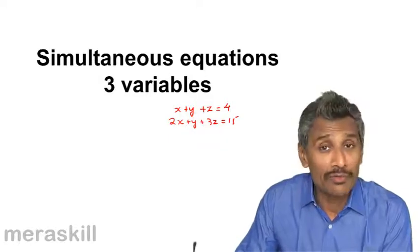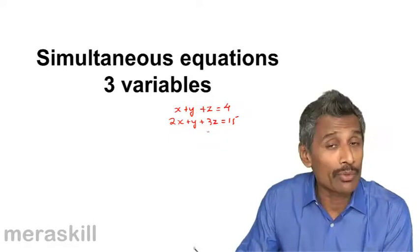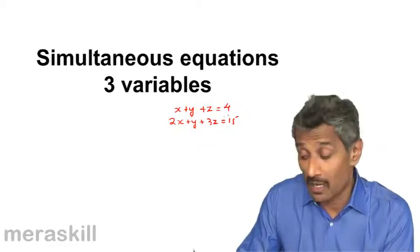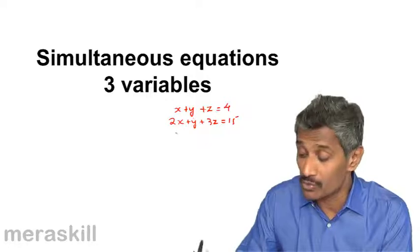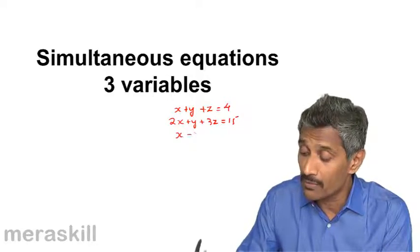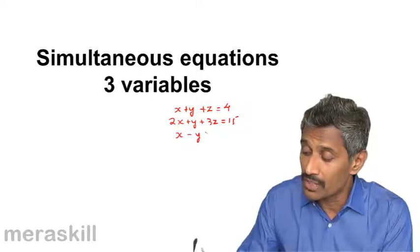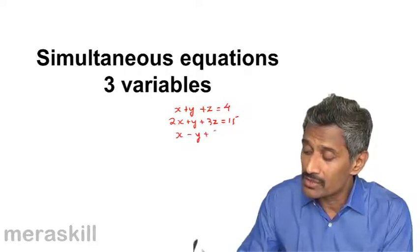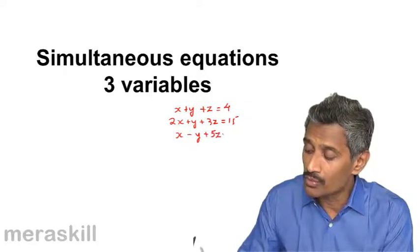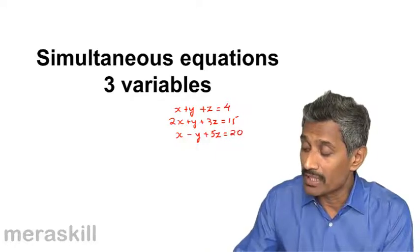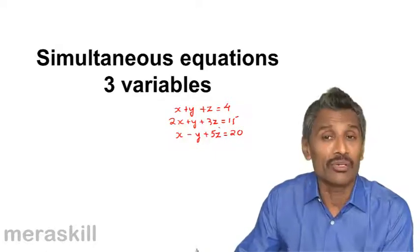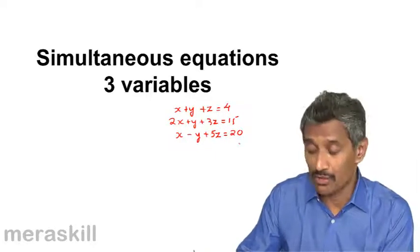If there are two variables, two equations are enough. But here we need three variables, so to solve them and get a unique set of values for these three, we need three equations to solve them.